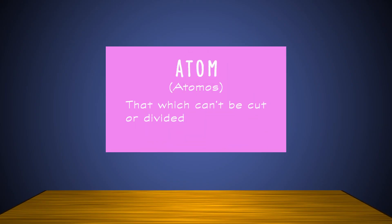Molecules like water molecules can be separated into smaller parts, but then it's not water anymore. You see, molecules are made up of groups of atoms. The word atom comes from the Greek word atomos, which means 'that which can't be cut or divided.' Atoms cannot be cut or divided using normal methods. They're the smallest, tiniest parts of matter.